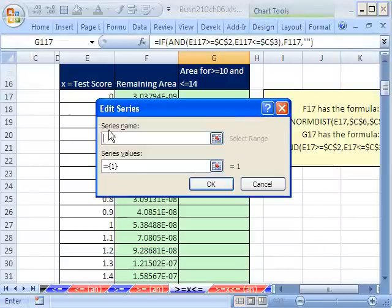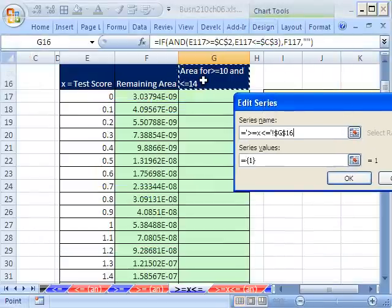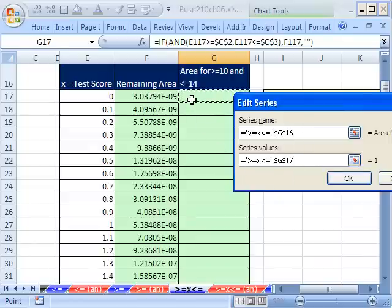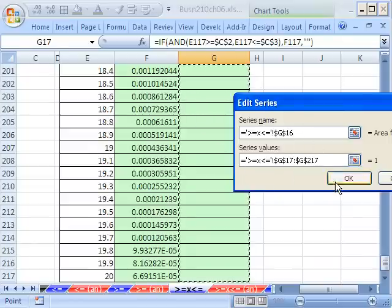Now we can take this whole column and add it. I click on the chart, just like we've done before. Design, Select, Add. The name is going to be this. The series values, I'm going to delete it. That gets in the way. Click on the top cell, Control Shift Down Arrow. Click OK.